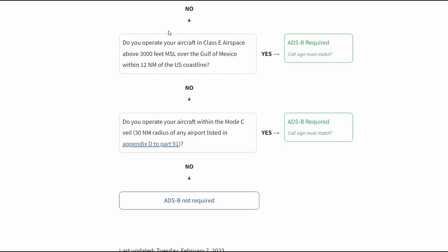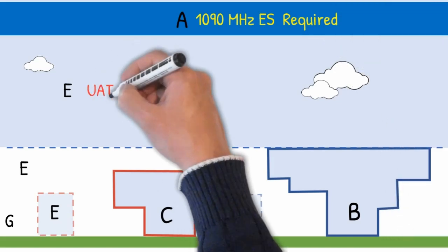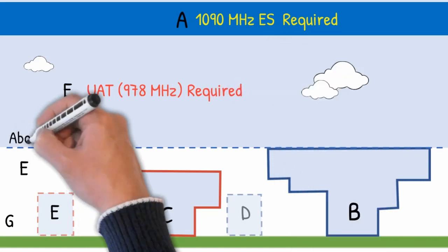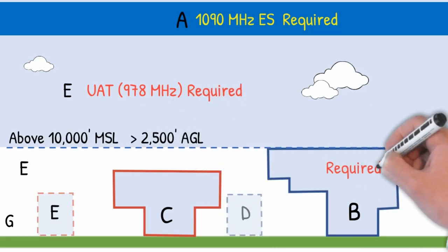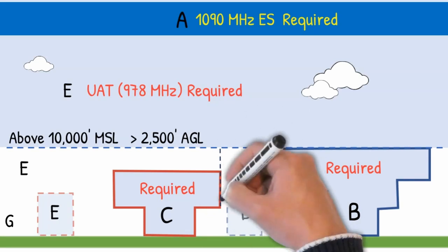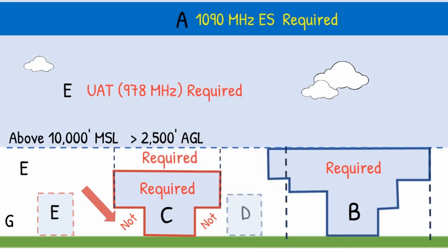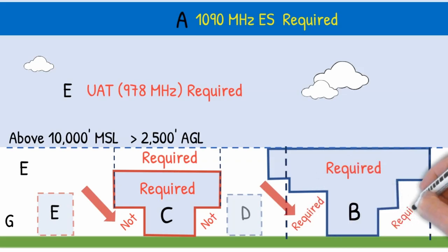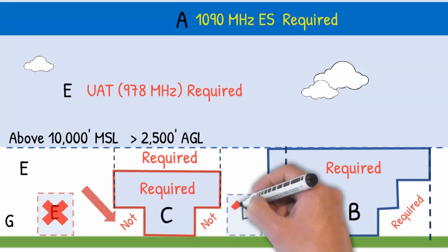Let's review. You need ADS-B in Class A airspace using the 1090 MHz ES version. You need the 978 MHz UAT version in Class E airspace above 10,000 feet MSL, except when below 2,500 feet AGL. In Class B airspace and Class C airspace — which includes all lateral boundaries of Class C up to 10,000 feet, but not below the lateral boundaries — this also applies to Class B. Don't forget the 30 nautical mile ring: ADS-B is required anywhere inside from the ground up to 10,000 feet when you're inside the 30 nautical mile ring. It is not needed in surface Class E airspace or in Class D airspace.